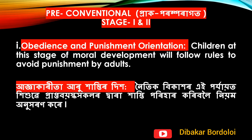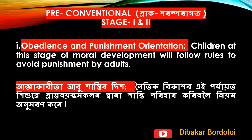The pre-conventional level includes stage 1 and stage 2. Stage 1 is obedience and punishment orientation. Children at this stage of moral development will follow rules to avoid punishment by adults.